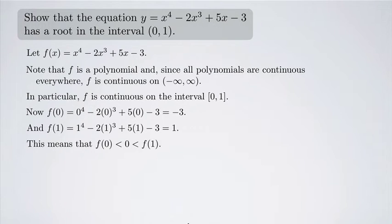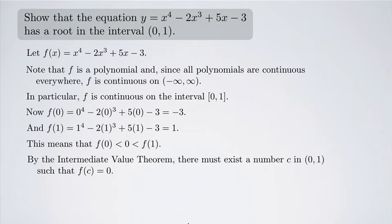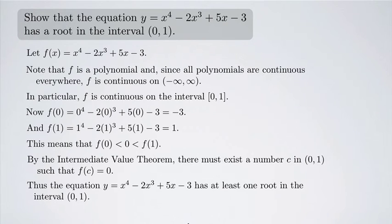This means that f(0) < 0 and f(1) > 0. So by the Intermediate Value Theorem, there must exist a number c in the interval (0, 1) such that f(c) = 0. That's just another way of saying that the function must cross the axis at least once. Therefore, the equation y equals x to the fourth minus 2x cubed plus 5x minus 3 has at least one root in the interval (0, 1).